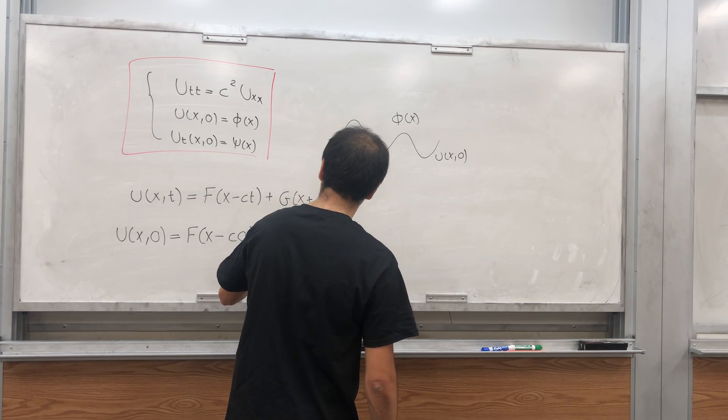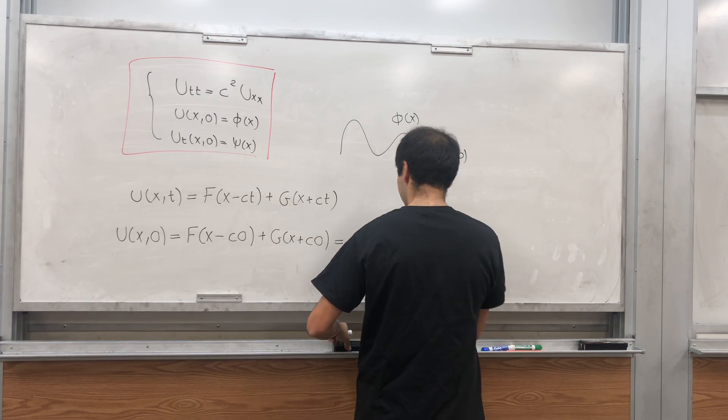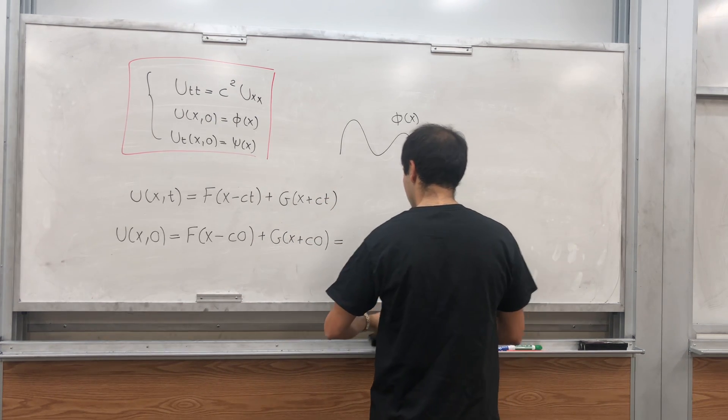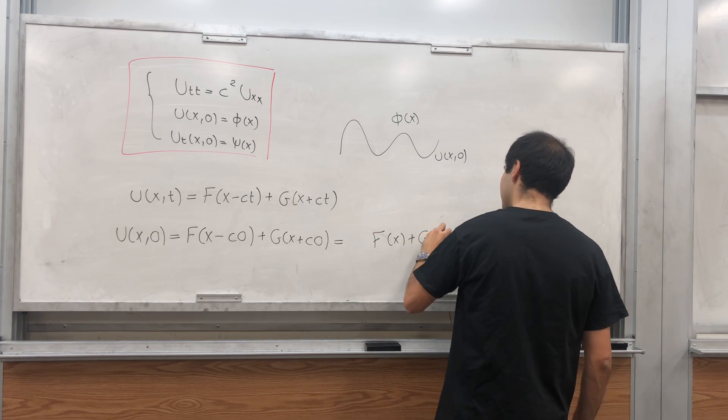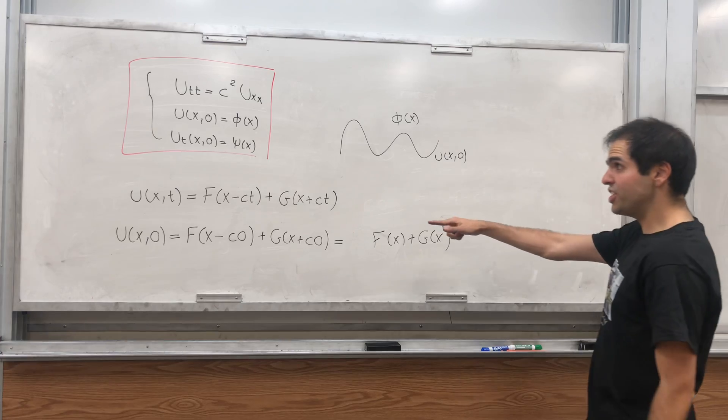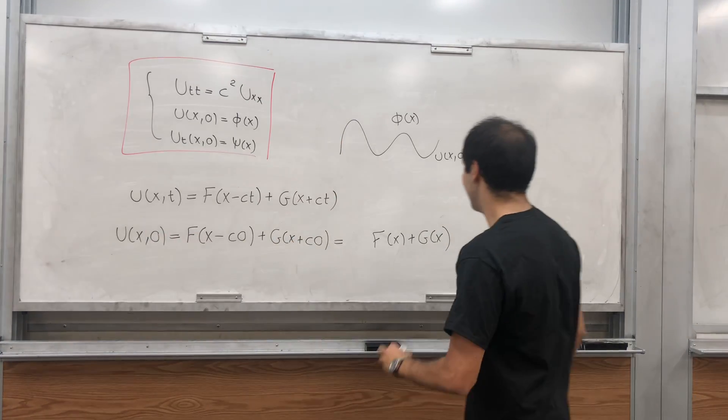Plus G of x plus c times zero, and that's F of x plus G of x. But we know the initial condition is phi of x. So u(x,0) is phi of x.